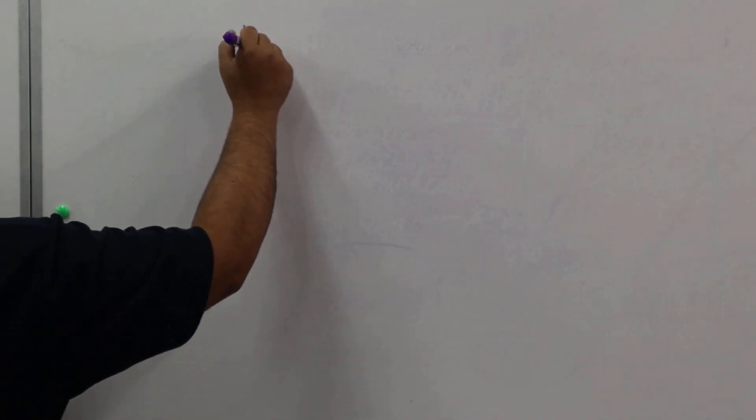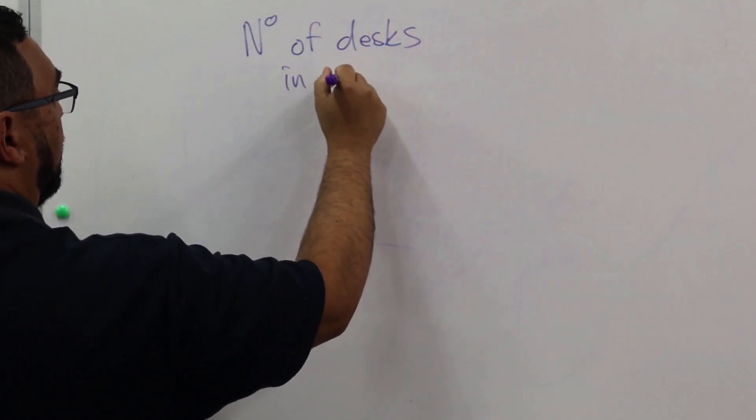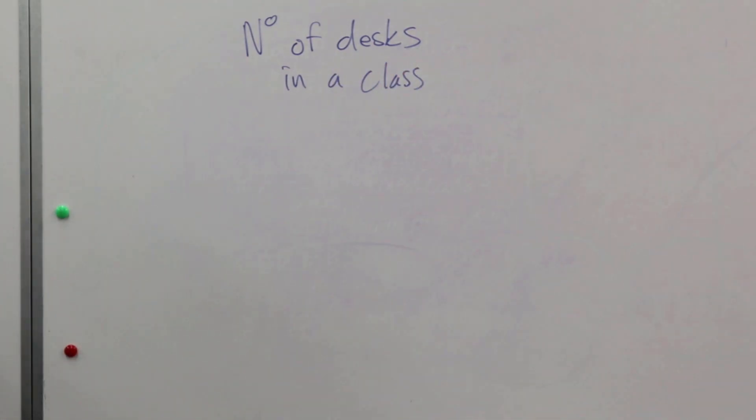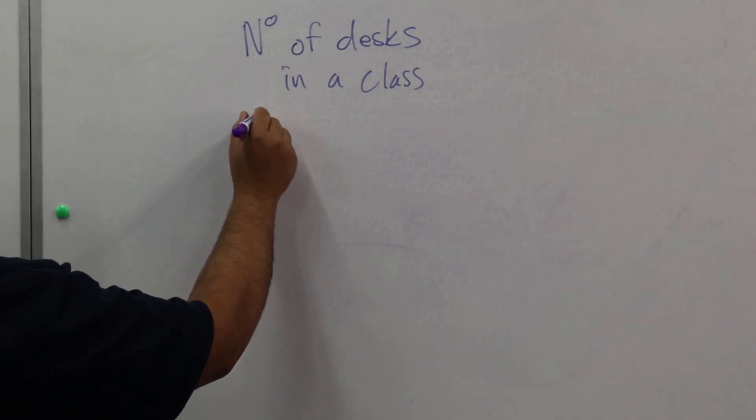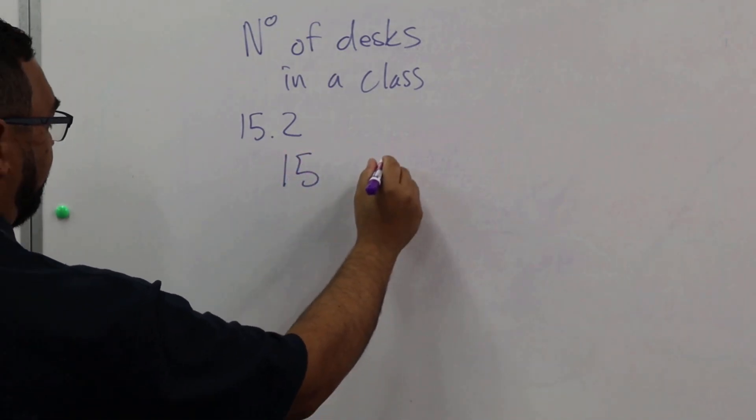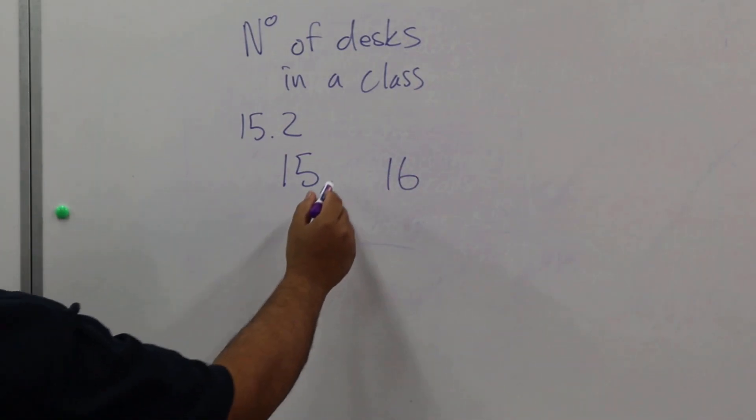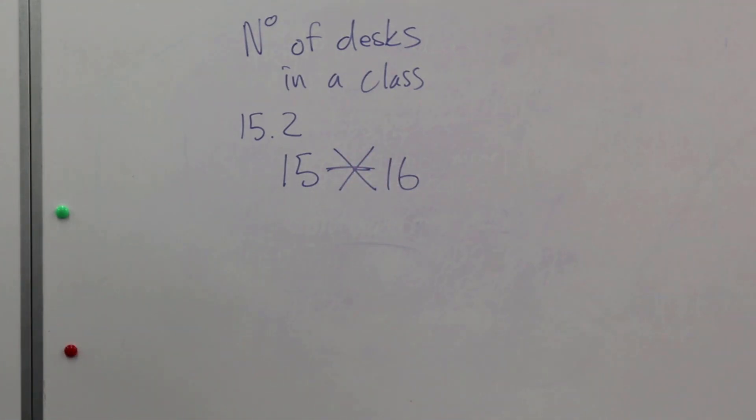In our next example, let's look at the number of desks in a class. Can we have 15.2 desks? No, why? Because desks are whole numbers. So you are either going to have 15 desks or you are going to have 16 desks, but you can't have anything in between. So is this an example of continuous or discrete data?